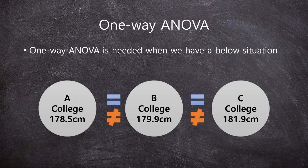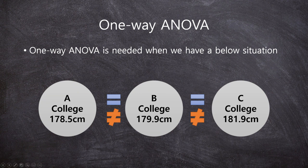So far, we mentioned one-way ANOVA is needed when we have a situation with multiple groups. For example, we have three groups and we want to compare the means of three college male students' heights. We just want to know whether the three means are the same or not. In this case, we have to do ANOVA. Today we will learn the essence of ANOVA — that is the F-value.